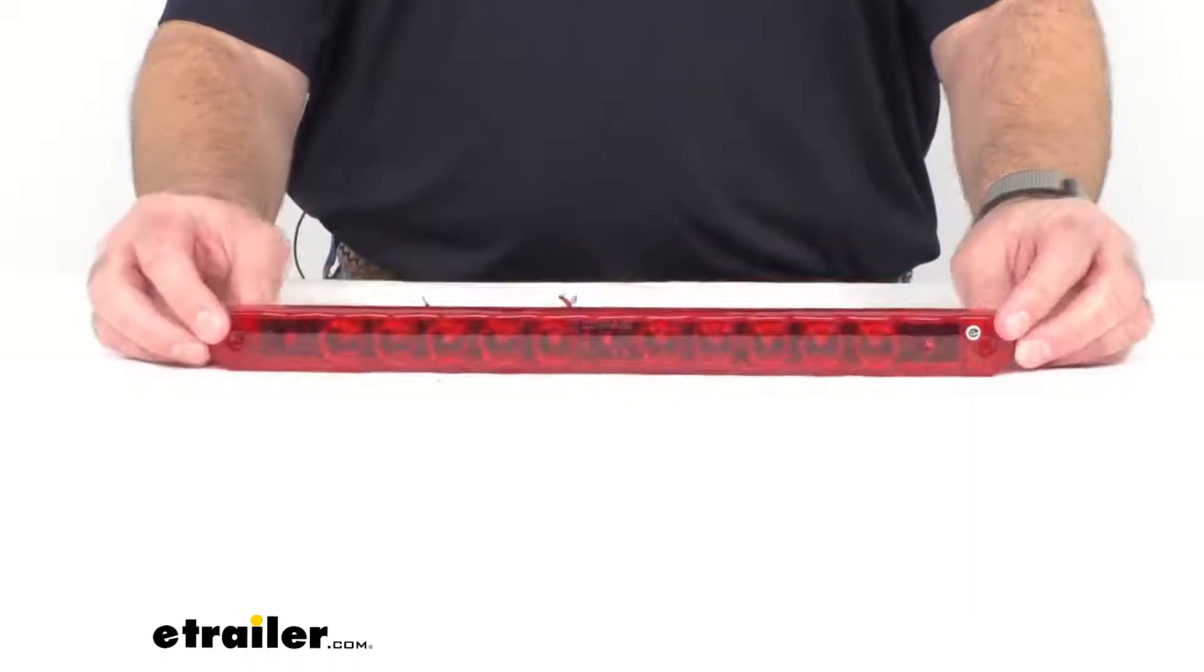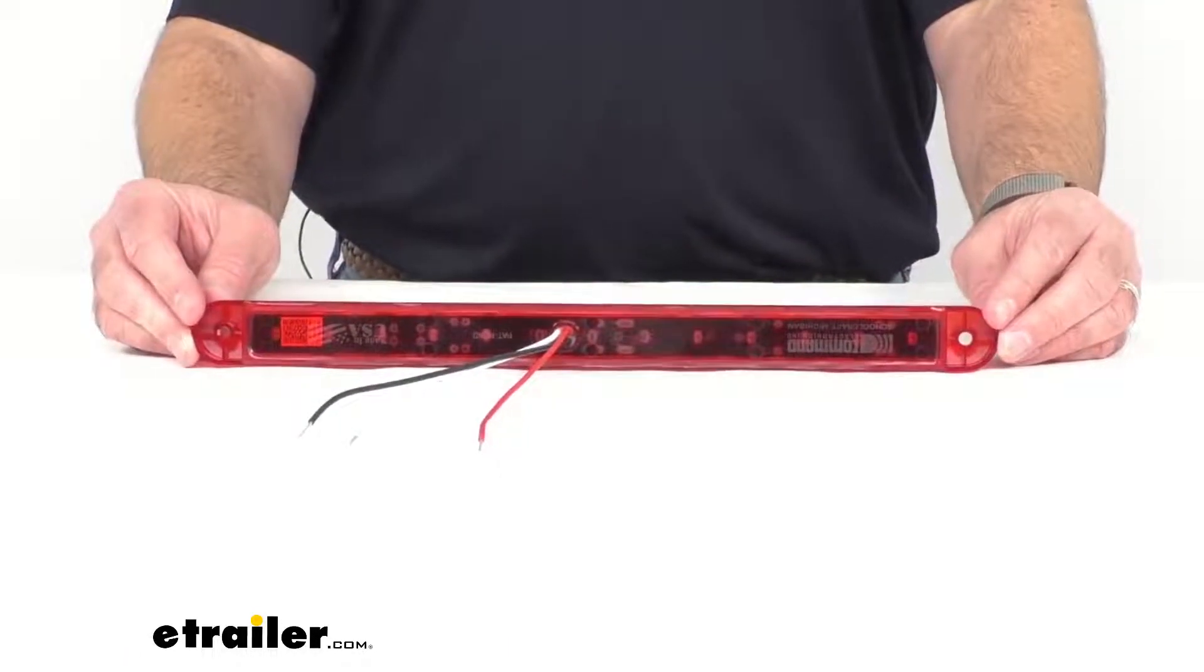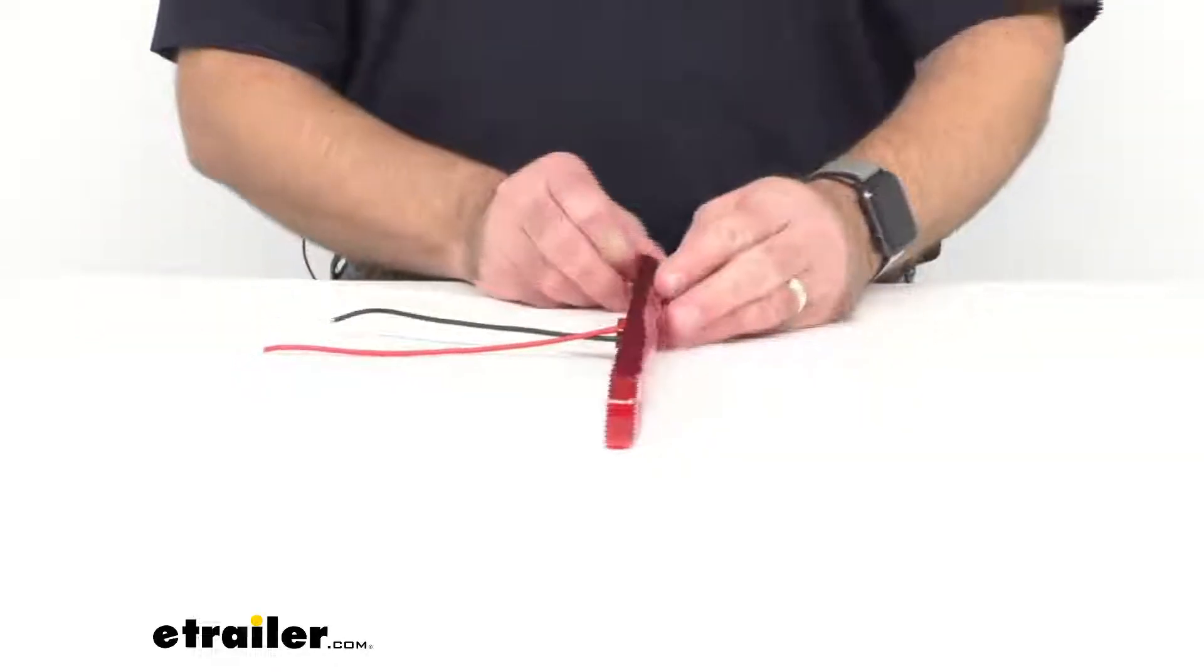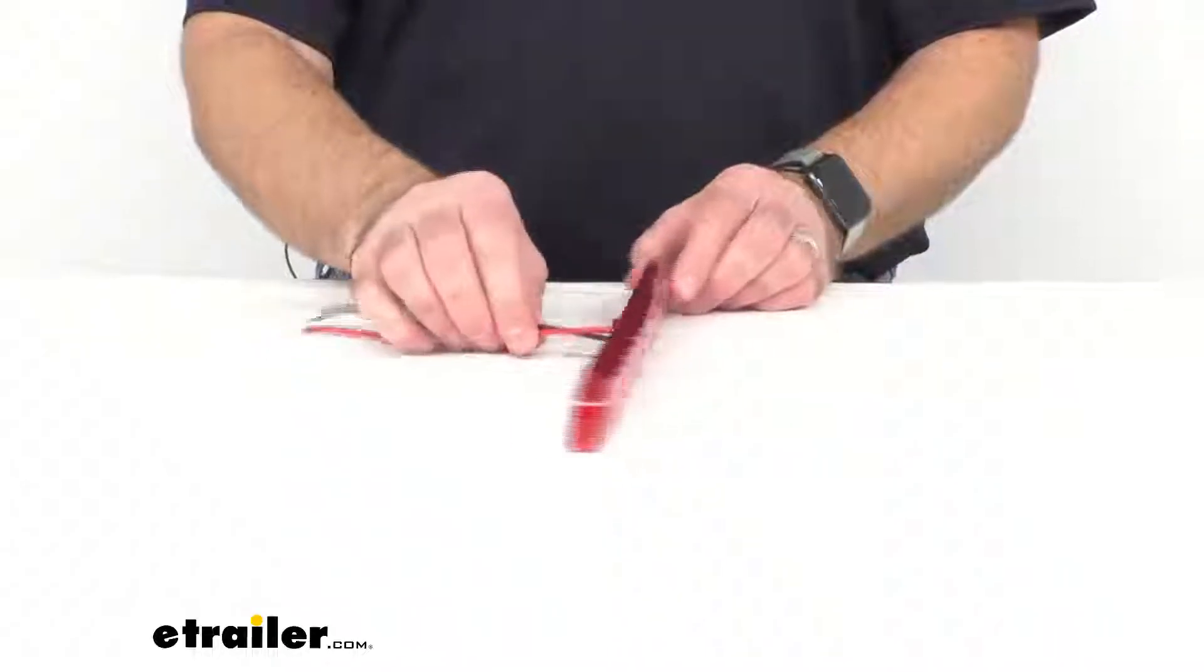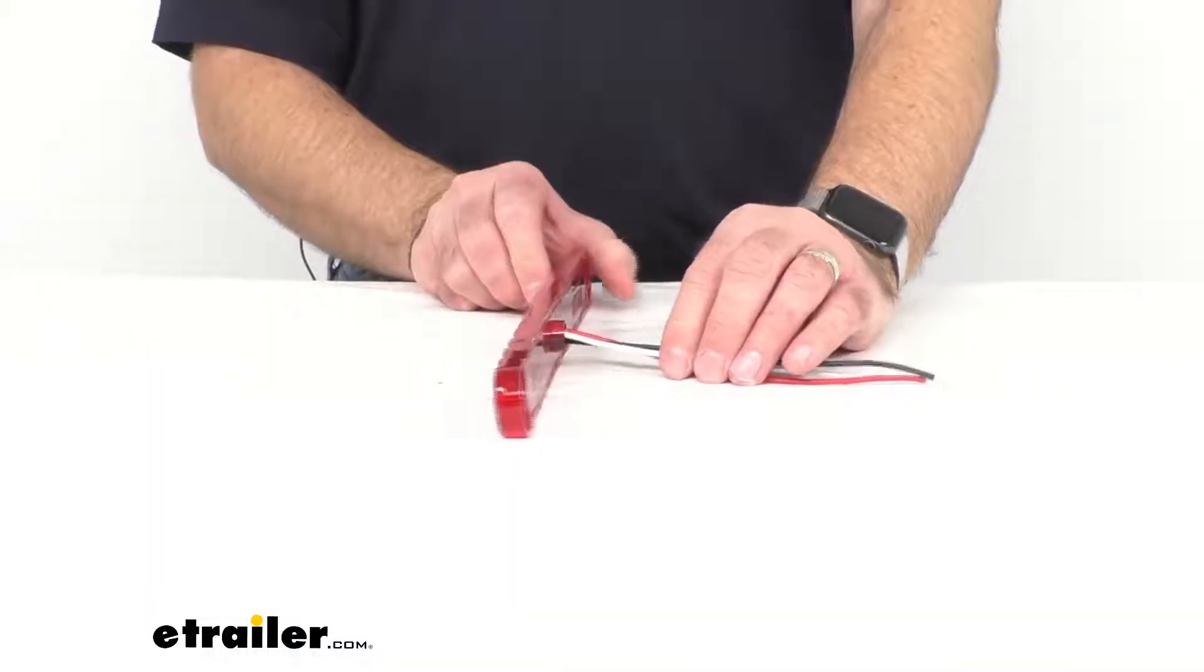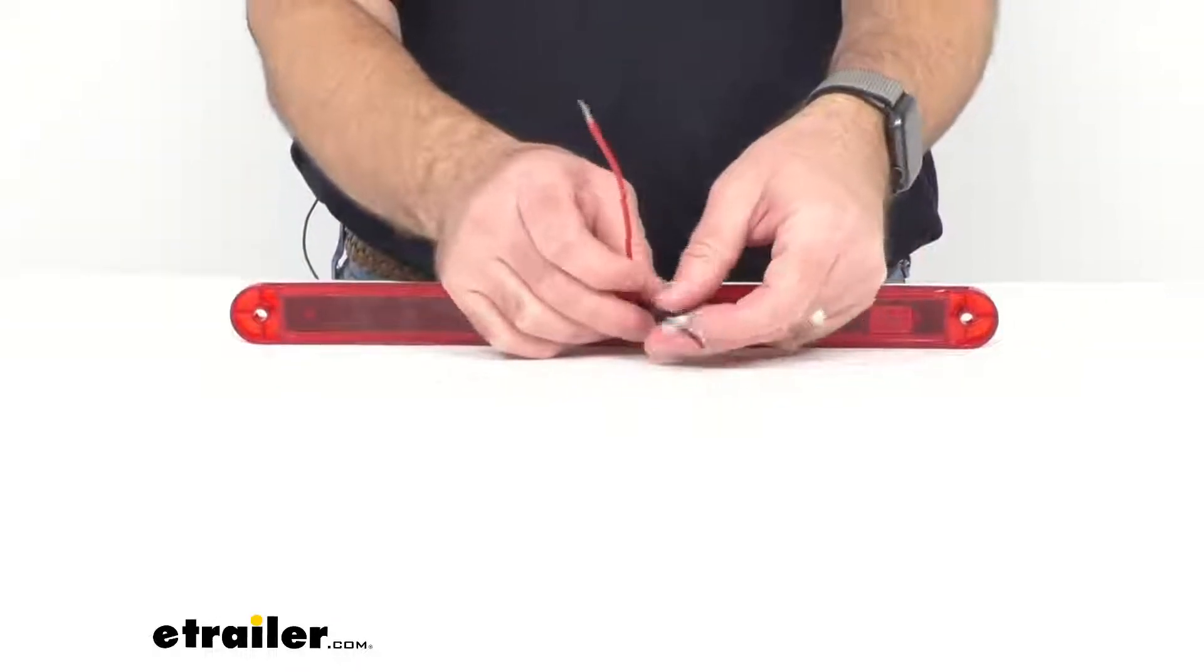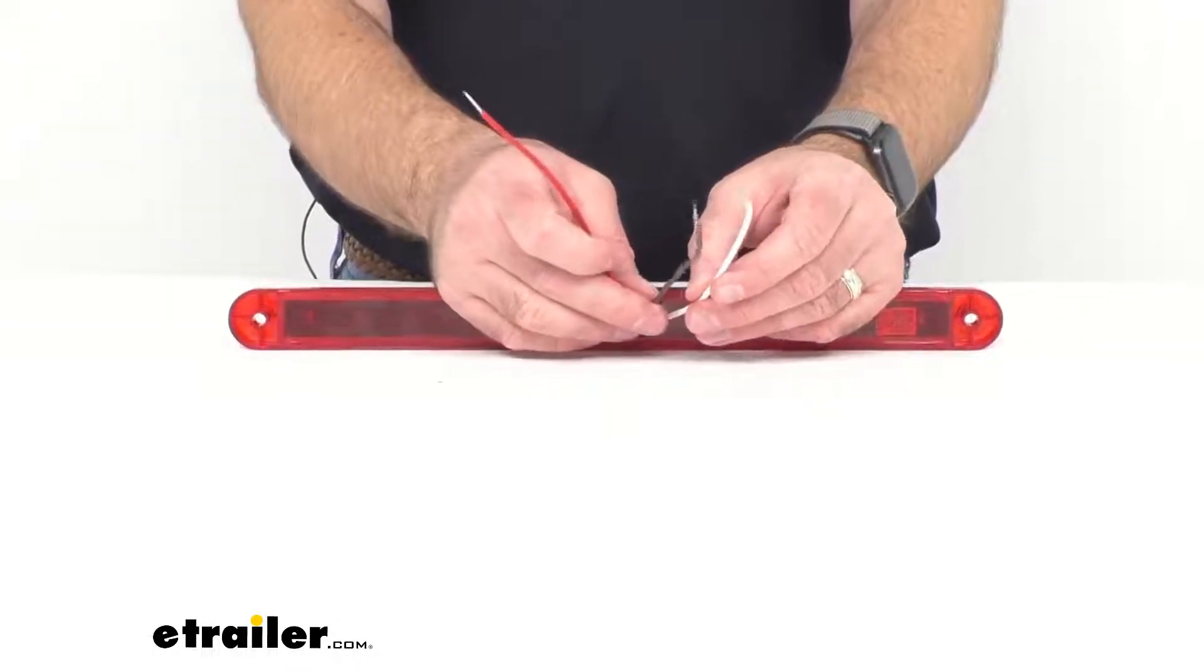Now this does mount on the surface of a trailer, however you do need to be aware that the installation hardware is not included, so you would have to source that locally. And this can be mounted horizontally or vertically. This is compatible with 12 volt DC systems, and as you probably saw, this is a three wire hard wire installation.